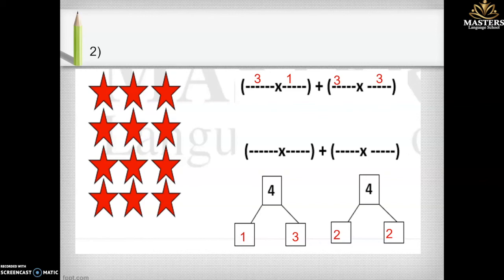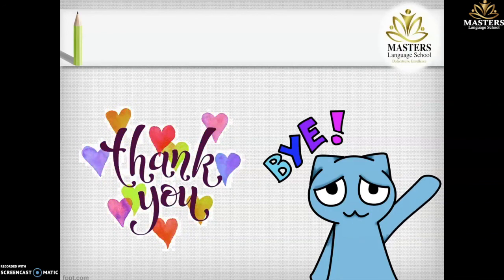Someone else might say they don't want to break four into one and three — they want to cut it into two plus two, which is also a correct answer. So we'd have three times two plus three, which is the smaller dimension or columns, times two. Then we find the answer. Thank you, primary three.